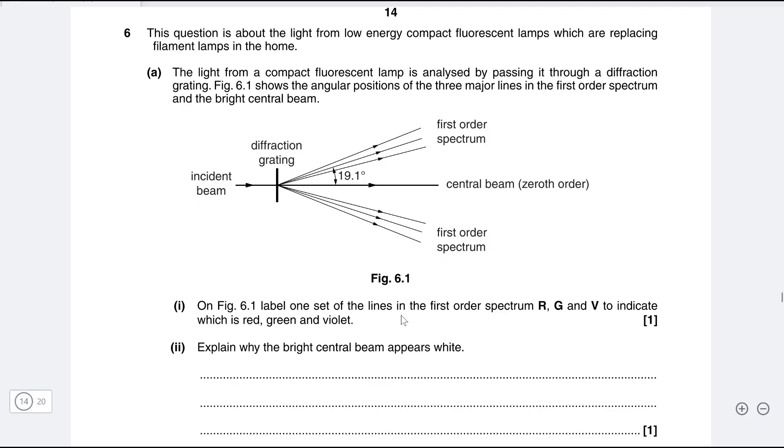On the figure label one set of the lines in the first order spectrum as r g and v to indicate which is red green and violet. The equation that governs diffraction gratings is that d sin theta is equal to n lambda. Now if our wavelength is higher the sine of the angle will be higher which means that our angle as well will be higher. So the highest angle will correspond to red which has the longest wavelength and the one with the shortest wavelength will be violet and green will be in between.